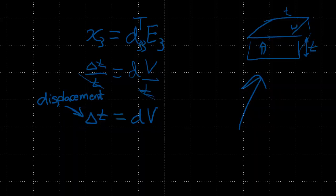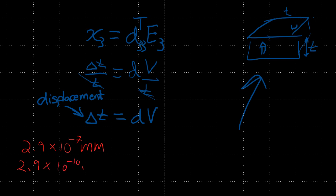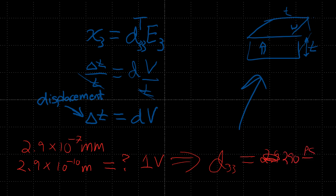Let's work out those numbers. We have a displacement of 2.9 times 10 to the negative 7 millimeters, which we should convert to meters — that's 2.9 times 10 to the minus 10 meters. This equals the piezoelectric D coefficient times the applied voltage, which is 1 volt. So, doing the algebra, this ends up being 290 picocoulombs per newton.